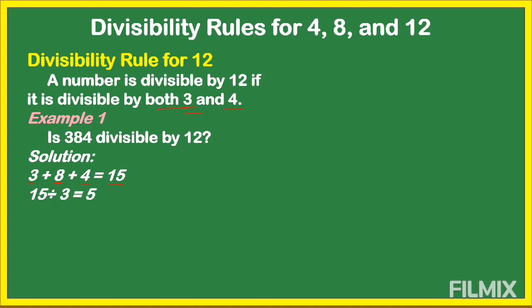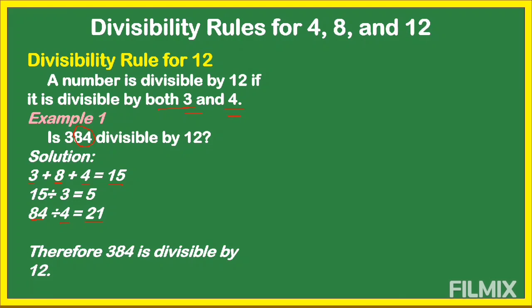How about 4? Let's check whether 384 is divisible by 4. For the divisibility rule for 4, we look at the last two digits: 84. Is 84 divisible by 4? Yes — 84 divided by 4 gives 21. Therefore, 384 is divisible by 12 because it is both divisible by 3 and 4.